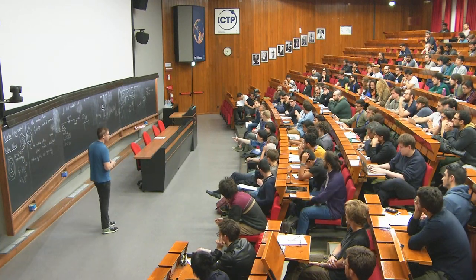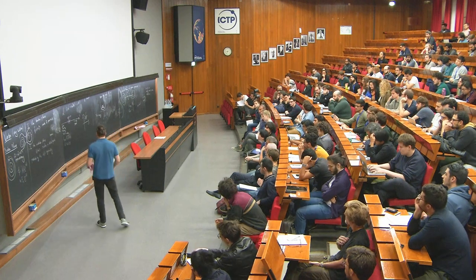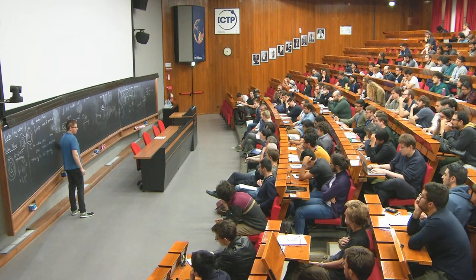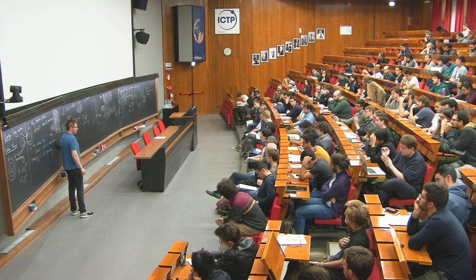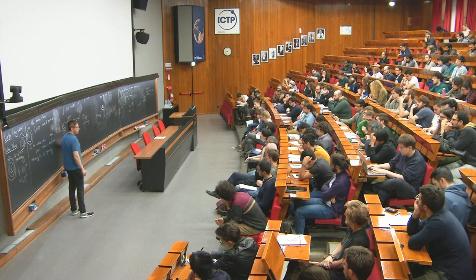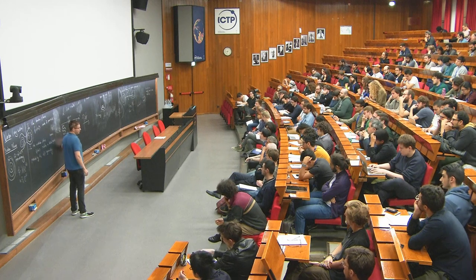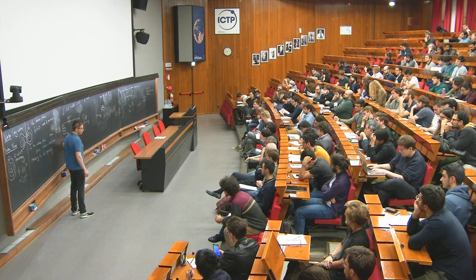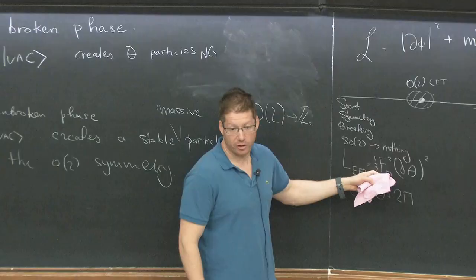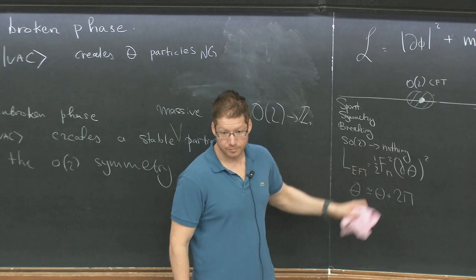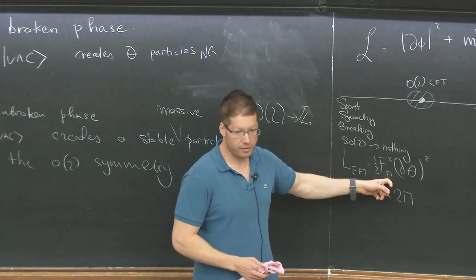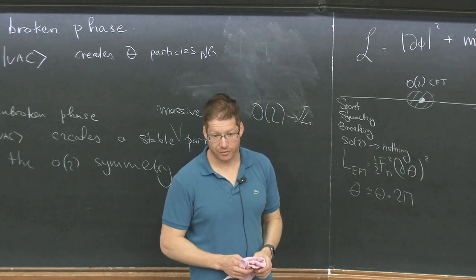F_pi^2 is just a dimensionful coefficient. The action makes sense with a dimensionless 2pi-periodic scalar field. So F_pi^2 has dimension one. In condensed matter literature it's called the stiffness constant of the superfluid. In particle physics it's called the decay constant of the pion — that's why I call it F_pi^2.